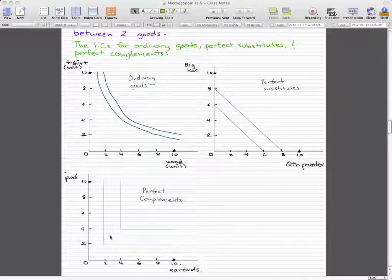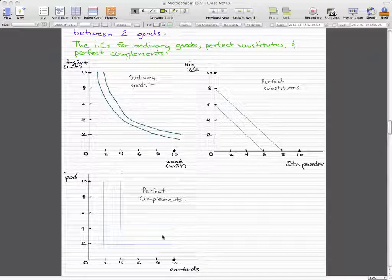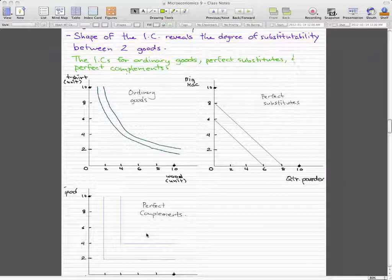Now for perfect complements, for example, like iPod and earbuds, you can't have an iPod without earbuds or else the iPod would become useless. The shape is L-shaped. So when you see an L-shaped indifference curve, you know right away that it represents perfect complements.